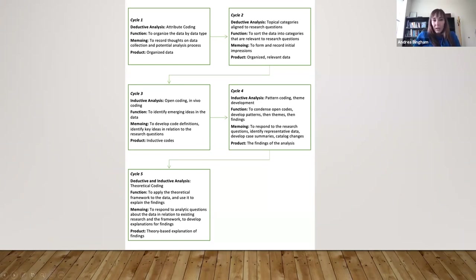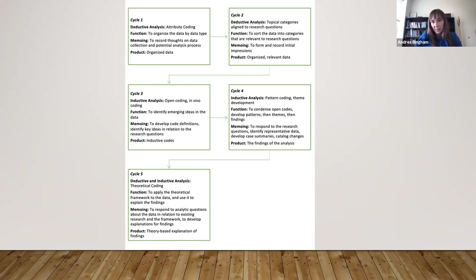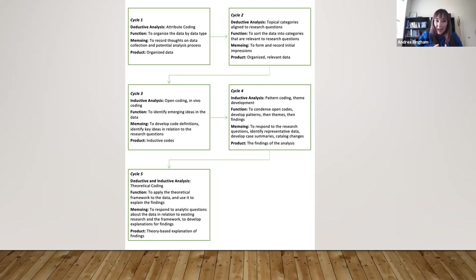Cycles three and four are focused on inductive analysis. Cycle three engages in open coding as well as in vivo coding — a key analytic strategy in qualitative research. The idea is to do a first pass looking for emerging ideas in the data, looking for what's there and starting to code and categorize that. Memoing in this process often revolves around creating a coding guide, starting to define codes, condensing them, and identifying key ideas in the data.